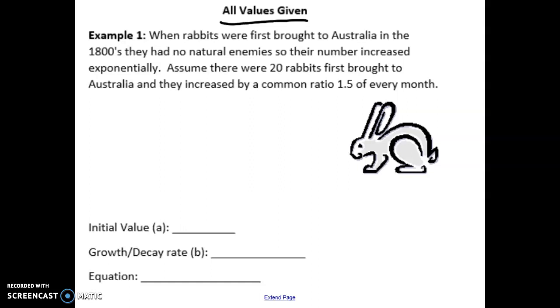So the first example, when rabbits were first brought to Australia in the 1800s, they had no natural enemies, so their numbers increased exponentially. Assume that there were 20 rabbits first brought to Australia, and they increased by a common ratio of 1.5 every month.